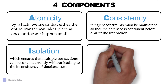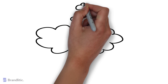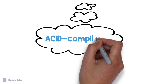Fourth, Durability — which ensures that once a transaction has completed execution, the updates and modifications to the database are stored and written to disk, and they persist even if a system failure occurs. These updates become permanent and are stored in non-volatile memory, so the effects of the transaction are never lost. Databases that have these four features are said to be ACID compliant.